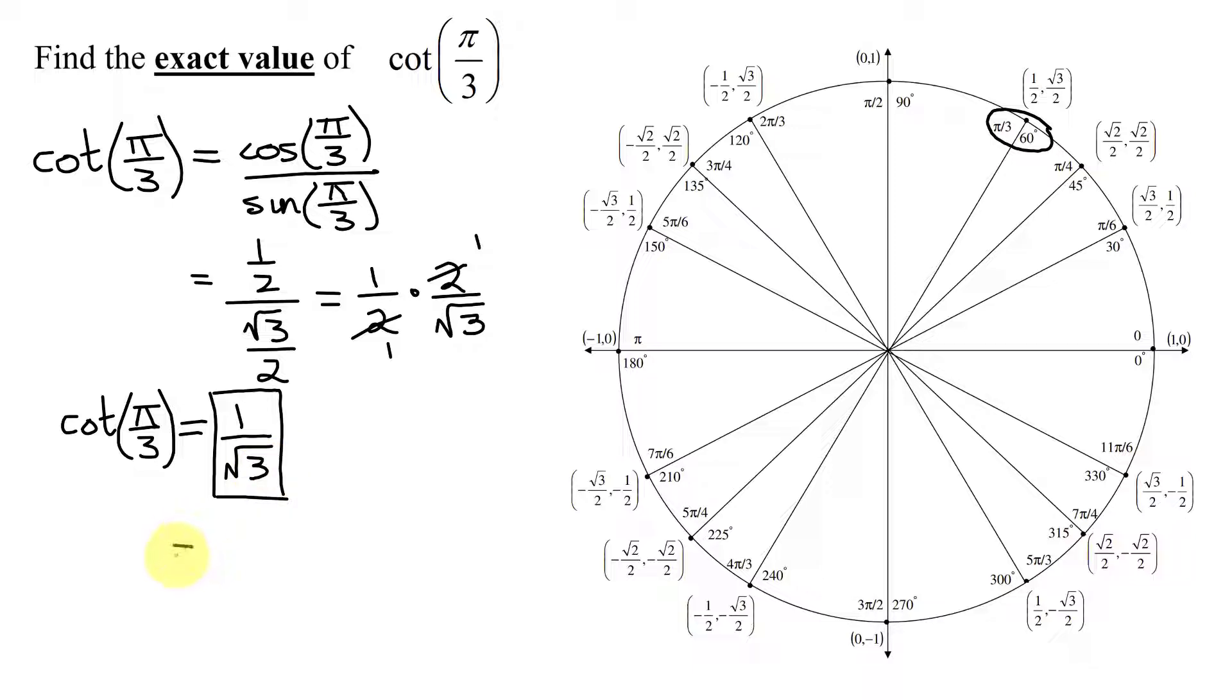However, if you do have to rationalize the denominator, you take 1 over the square root of 3, and you multiply it by the square root of 3 over the square root of 3. So I get 1 times the square root of 3 is the square root of 3, divided by the square root of 3 times the square root of 3, which is the square root of 9, which is 3. So that is the answer to this problem if you have to rationalize the denominator.